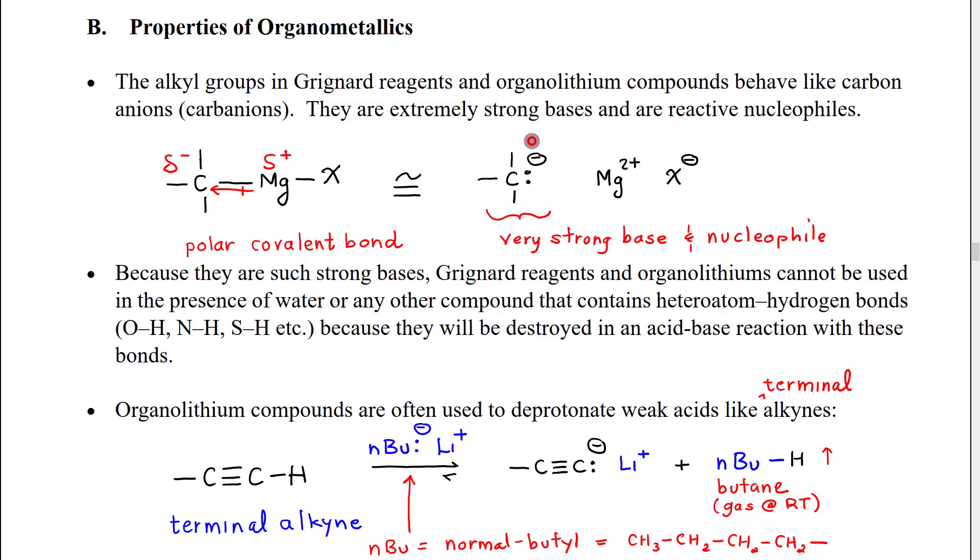When we look on the pKa table, we see that carbanions are essentially the strongest bases on our table. If we look in the right-hand base column, they are literally at the very bottom of that column. Because they are such strong bases, they are extremely reactive with anything that even has the slightest acidity. That's going to put limitations on their use.